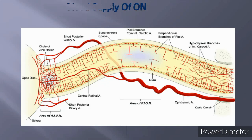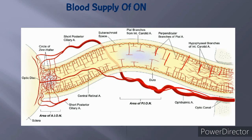Now the blood supply of the optic nerve. It is basically supplied by the ophthalmic artery, which is a branch of the internal carotid artery and wraps around the optic nerve. The pial blood vessels also supply the optic nerve. The ophthalmic artery gives a branch called the central retinal artery, which enters the optic nerve and passes through the middle of it, with all the nerve fibers wrapped around it. Branches of the internal carotid artery also supply the optic nerve.